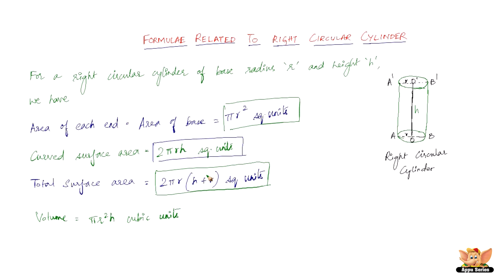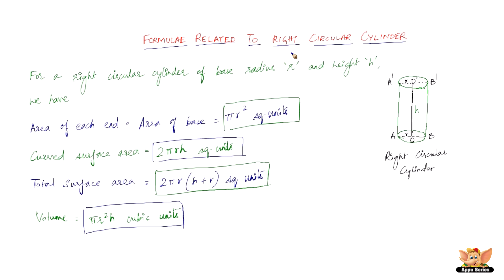So if you want to find the volume of a right circular cylinder, use that formula. This ends the video in which we covered the formulas related to the right circular cylinder. This should be sufficient to solve most problems based on it. In the next video we'll cover the formulas related to a right circular hollow cylinder — this one is a solid cylinder.